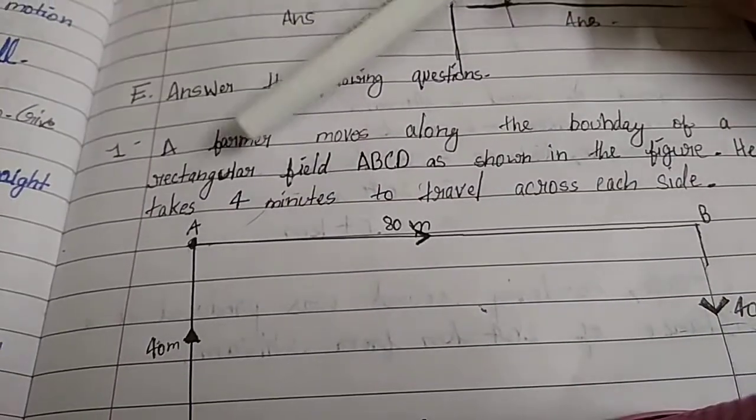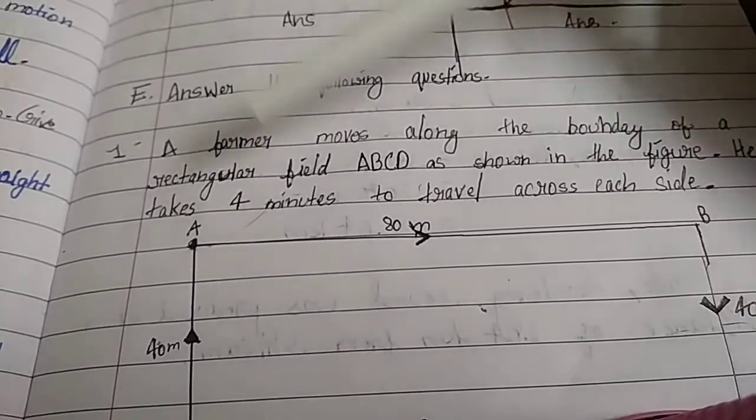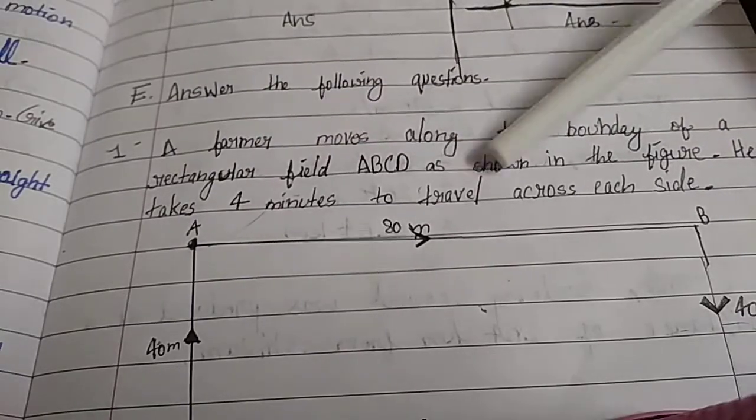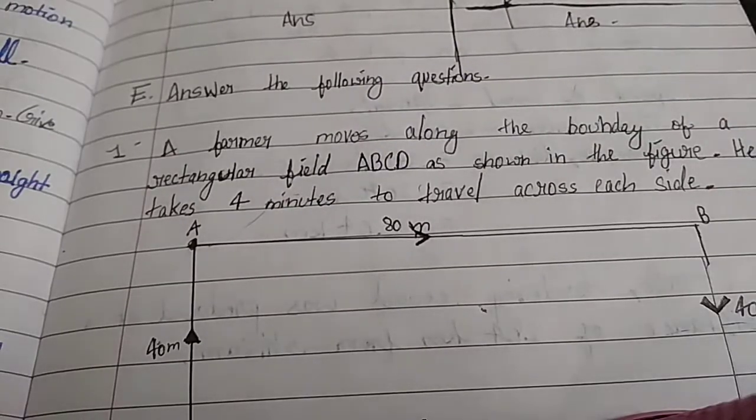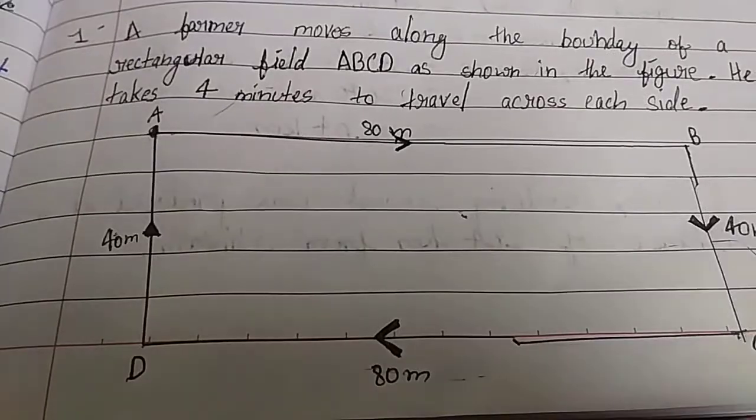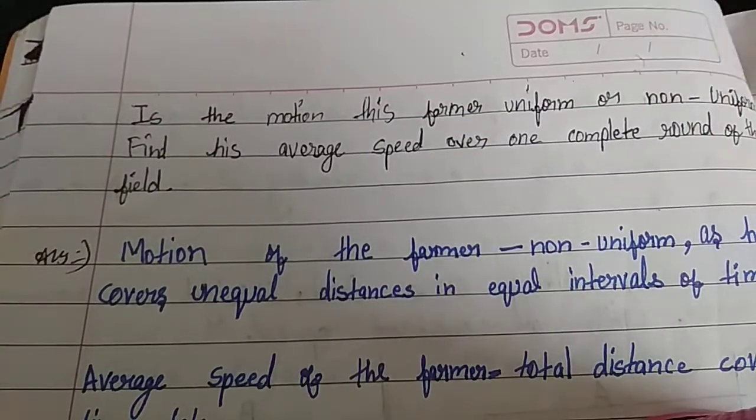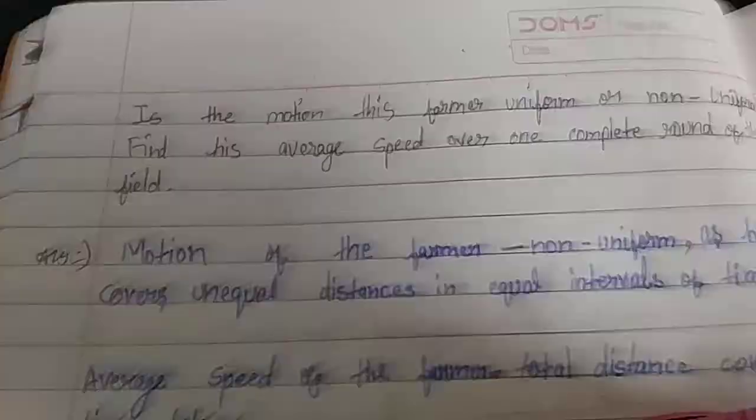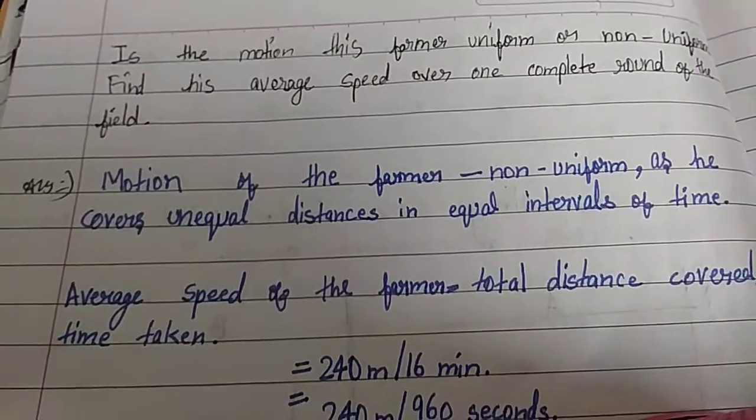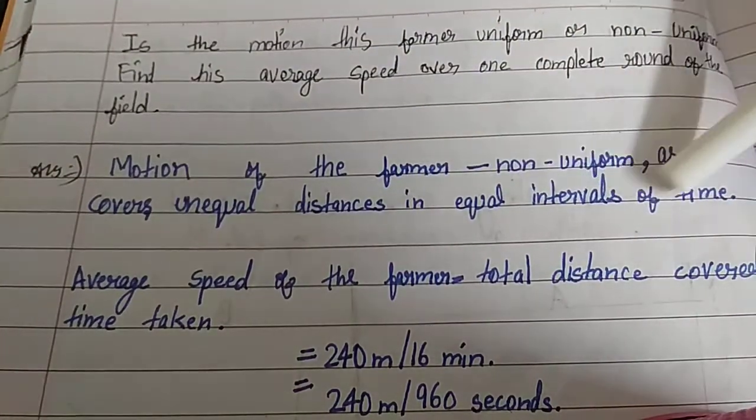Eighth question: A farmer moving along the boundary of a rectangular field ABCD. He takes 4 minutes to travel across each side. Is the motion of this farmer uniform or non-uniform? Answer: Motion of the farmer is non-uniform as he covers unequal distance in equal intervals of time.